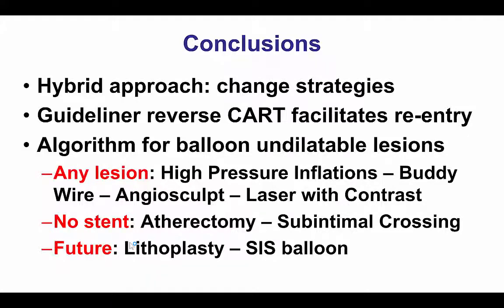The third lesson is on the importance of having an algorithm for treating balloon undilatable lesions. The therapies can differ based on whether a stent is implanted or not — if there is no stent, options include atherectomy and subintimal crossing, which are not good options once a stent has been placed. The first step is usually high-pressure balloon inflation, followed by inflation using a buddy wire or an AngioSculpt, and then laser with contrast. In the future, new technologies such as lithotripsy and the high-pressure SIS balloon that can go up to 35 atmospheres can help successfully treat such lesions.